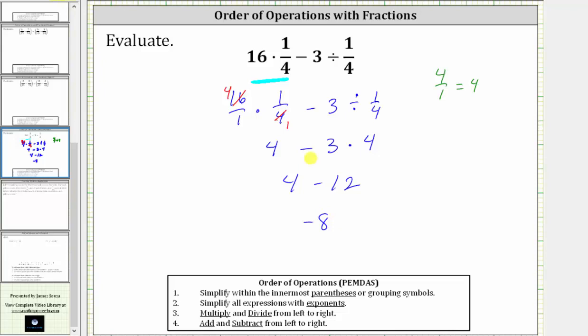Remember if it's helpful, 4 minus 12 is equivalent to 4 plus negative 12, which is equal to negative 8. The given expression simplifies to negative 8. I hope you found this helpful.